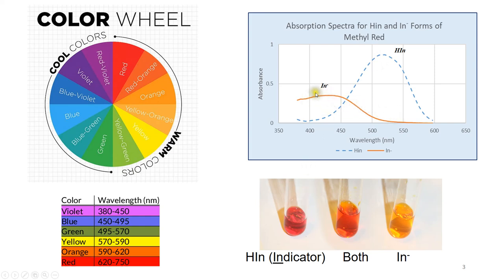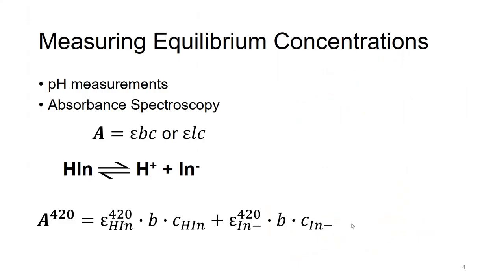For the basic form, In⁻ absorbs a wide range around 400 to 450 nanometers, which is violet light, and therefore it appears yellow. That's why In⁻ has a yellow color. If you have both HIn and In⁻, it's going to look orange. We need to determine the concentrations of H⁺, In⁻, and HIn to get the equilibrium constant for the acid ionization.